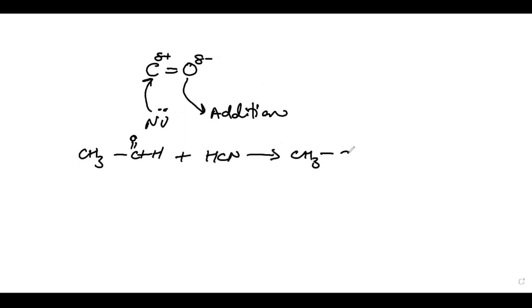This gives CH3-C-O-H with H and CN groups. Similarly, CH3-C=O-CH3 plus HCN gives CH3-C-O-H with CH3 and CN groups. So we will see this reaction.